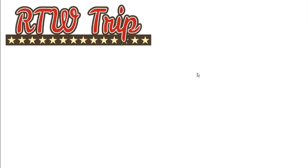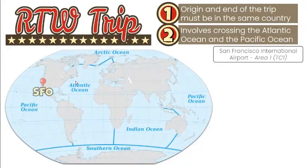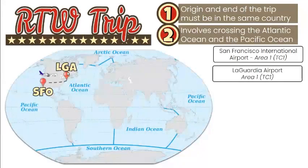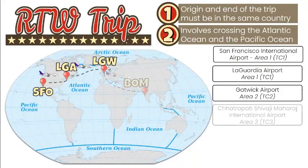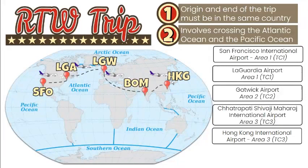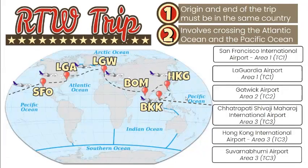In an RTW trip, it's a must to have the place of origin and the end of the trip in the same country. The itinerary should also involve crossing both the Atlantic Ocean and the Pacific Ocean. In this RTW trip example, the journey begins from San Francisco going to LaGuardia. The next flight is from LaGuardia to Gatwick, with a stopover before proceeding to Mumbai. Another flight goes to Hong Kong, and after several days there, travelers continue to Bangkok before returning to San Francisco. Note that both the Atlantic and Pacific Oceans are crossed, and IATA areas 1, 2, and 3 are all covered.